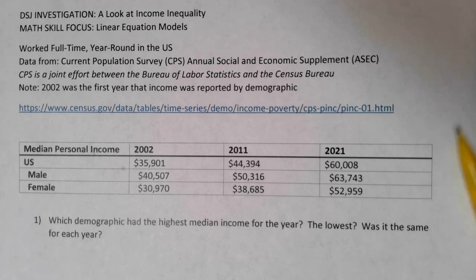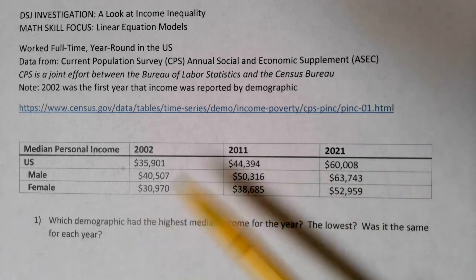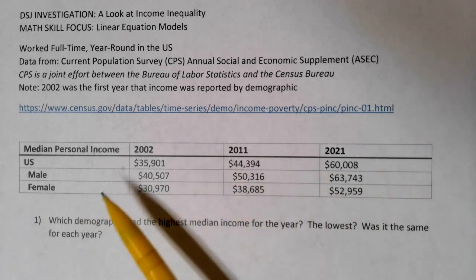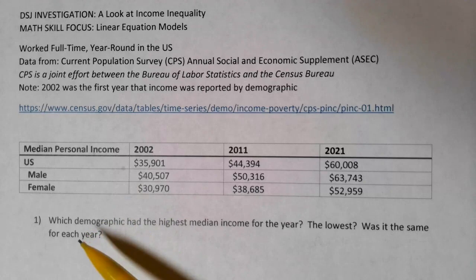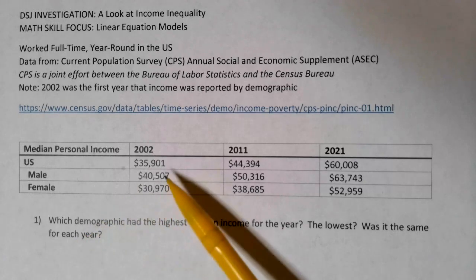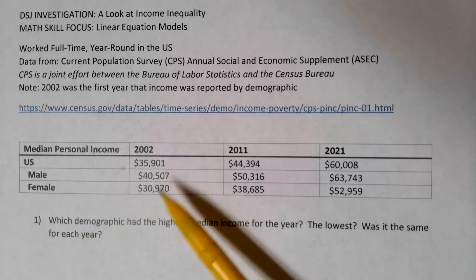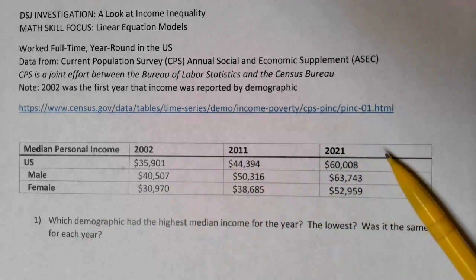For this diversity and social justice assignment, we are going to be taking a look at the median personal income of people that were working full-time and year-round in the U.S. We're looking specifically at data that was gathered from the census in 2002, 2011, and 2021.